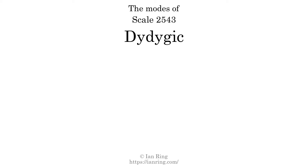Here is a Hamiltonian path of parsimonious voice leading that uses all the triads. This scale has 9 modes. The first mode is itself.